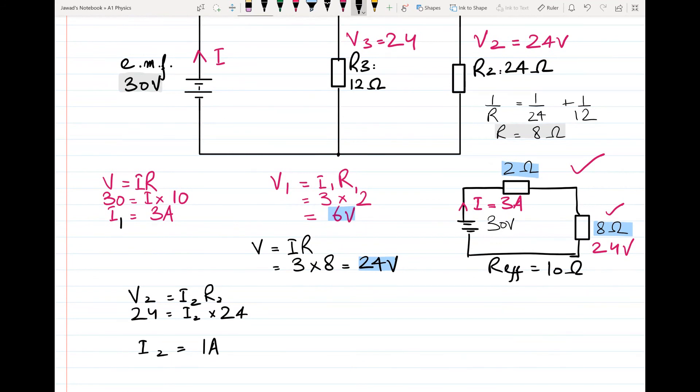Similarly, the value of V3 equals I3 times R3. V3 is 24 volts. Find I3 - the value of R3 is 12 ohms. From here, the value of I3 is coming out to be 2 amperes.